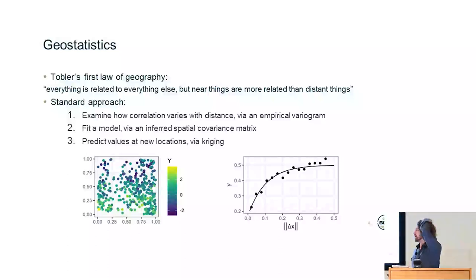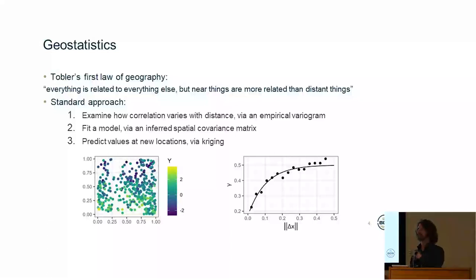So the standard approach to this problem is to examine how the correlation between different points varies with distance. If we have this dataset on the left where we have some spatial position and some variable y that we're measuring, we can try to estimate what is the expected variance between two positions a given distance apart as a function of that distance. We can estimate that using this empirical semi-variogram on the right. Having done that, we can use this to constrain a covariance matrix, and we can use that covariance matrix to fit a model for the data. Then you can predict the value at new locations via kriging.